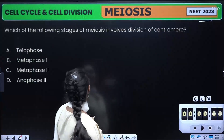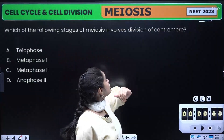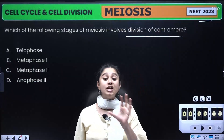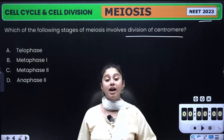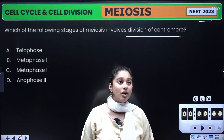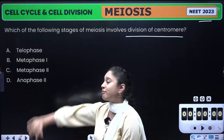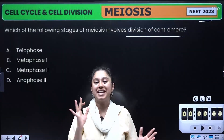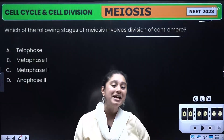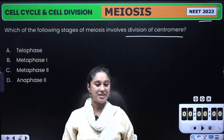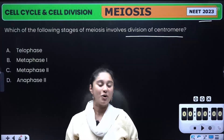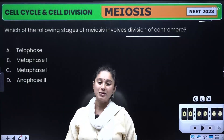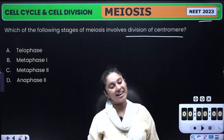The question is: in the following stages of meiosis, where does the division of the centromere take place? You have 4 options. Don't forget to comment your correct answer below. Study well, focus well and take care. Bye bye.